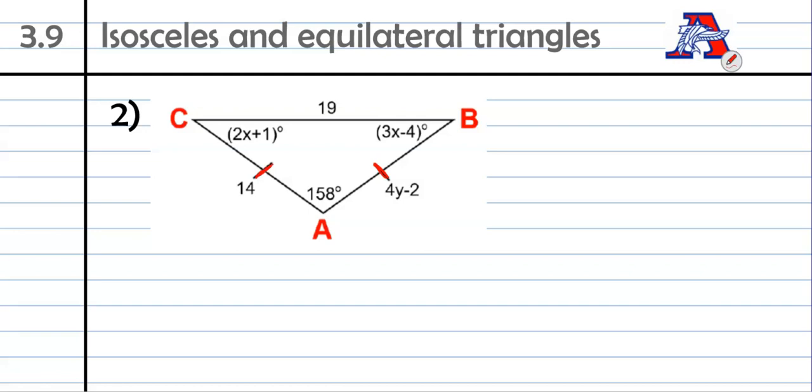You can see that these little tick marks here mean that those sides are congruent because it's an isosceles triangle. So I now know that 4y minus 2 has to be equal to 14. That'll be a pretty easy one to solve. 4y equals 16, divide by 4. So y is equal to 4. So that one's done. We also know that that side had to be 14. So I can just do that right away. 4 times 4 is 16, minus 2 is 14. So that's done.